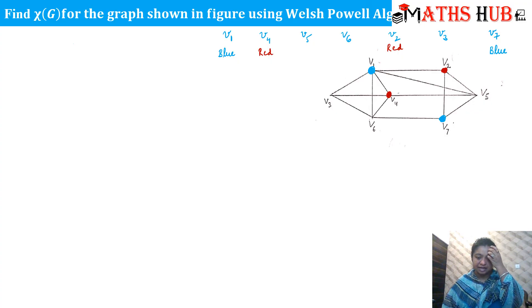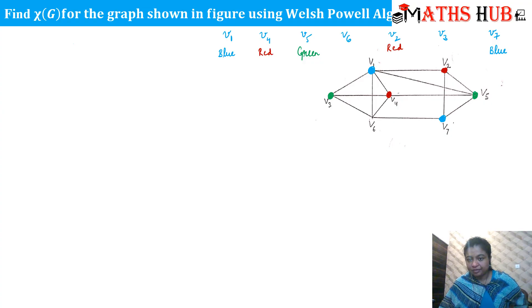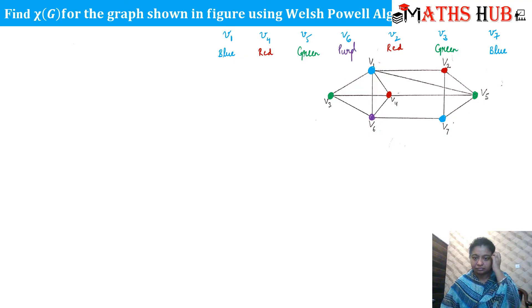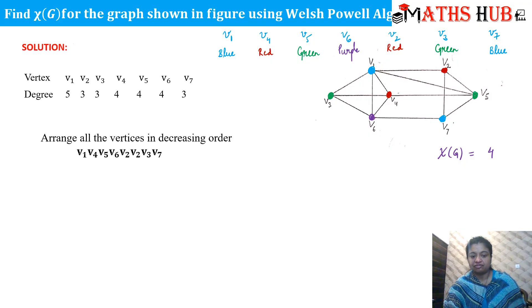Now we choose the next color — green — and mark V5 with green. V5 is next in the list. With V5 marked green, we can also color V3 with green. However, V6 cannot be marked green because V3 and V6 are adjacent. So we choose the next color and mark V6 with purple. All vertices in the graph are now colored, and the minimum number of colors used is 4. So the chromatic number for this graph equals 4.